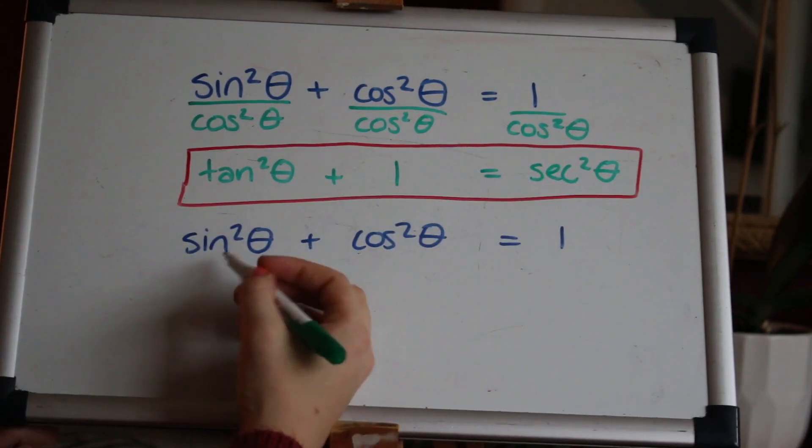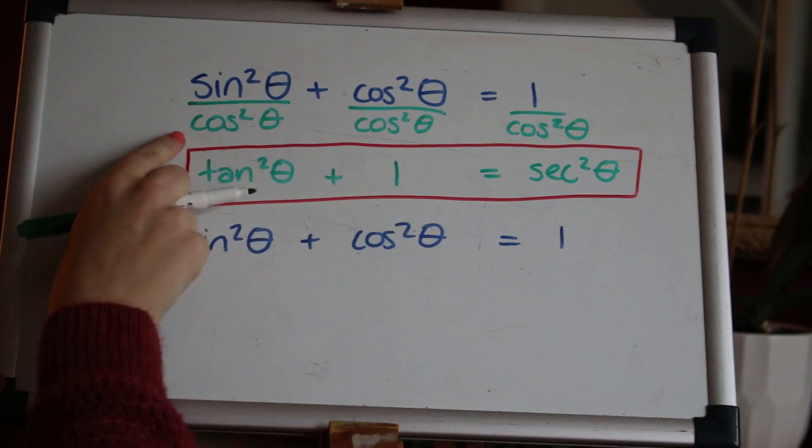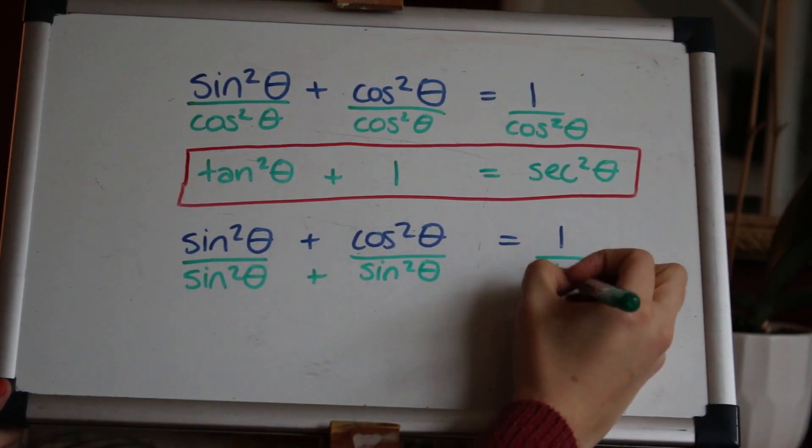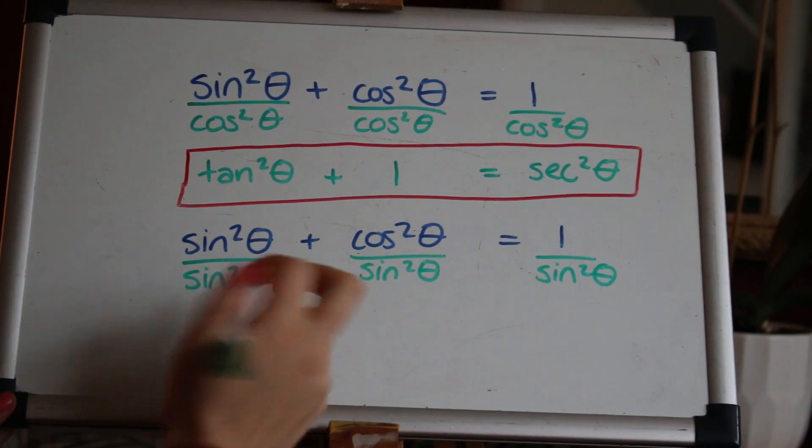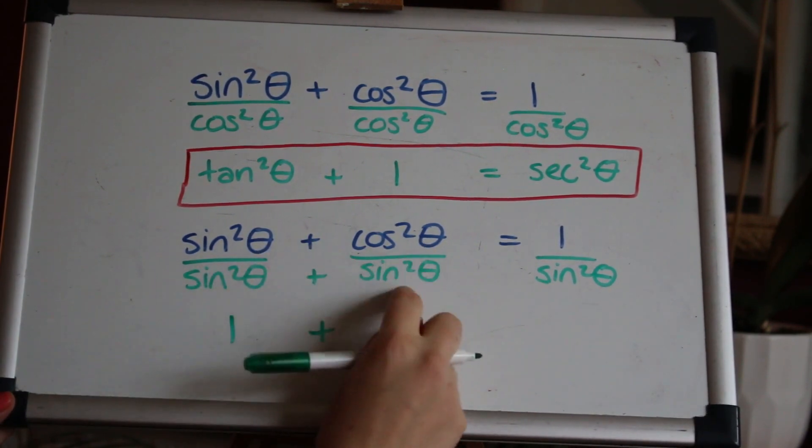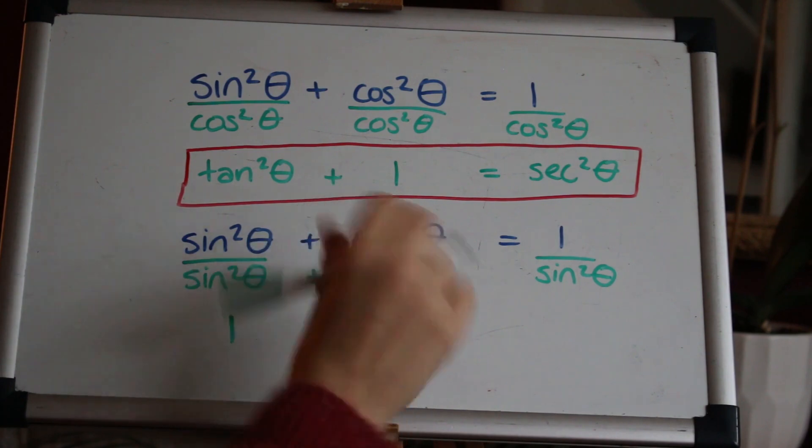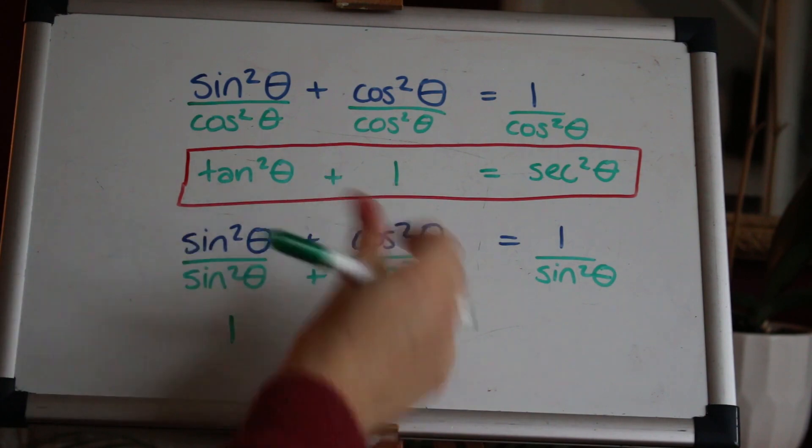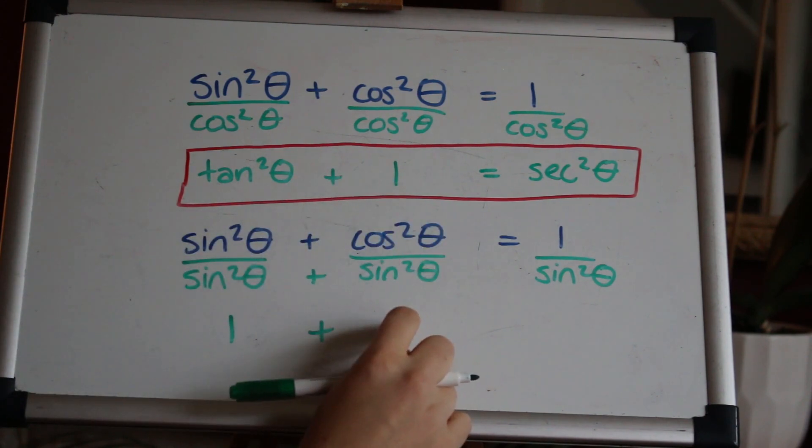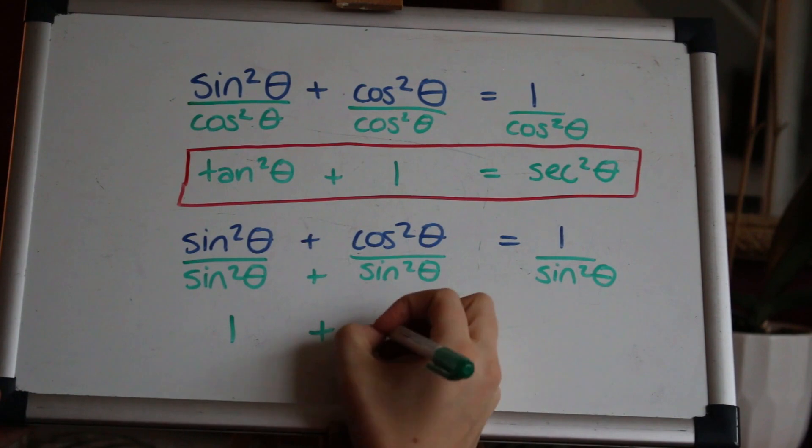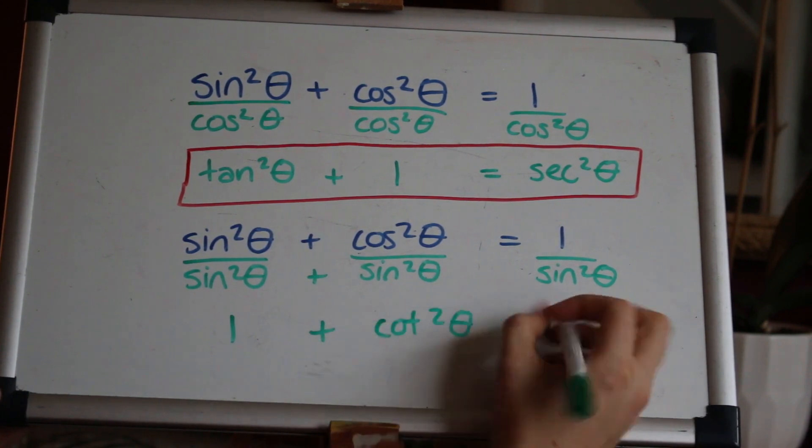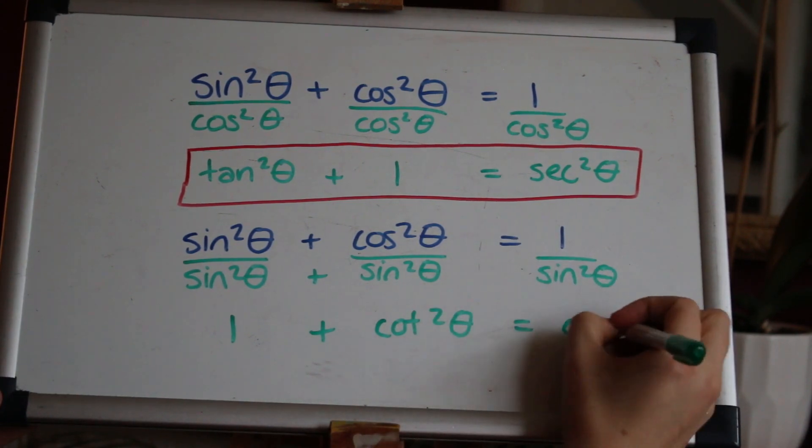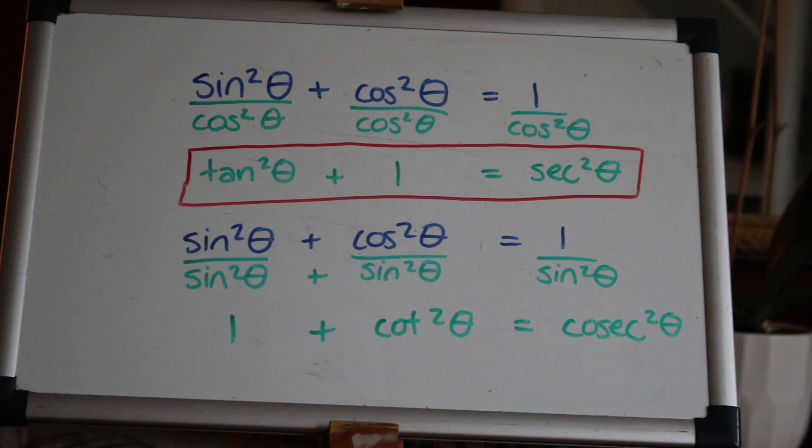Now for the second identity we're going to start with this again but this time we'll divide by sin²θ. Cos over sine is the flip, the inverse of tan. So the inverse of tan, one over tan, is as we know cot, so this here will be cot²θ. And one over sine as we now know is cosec, so that will be cosec²θ. And that gives you the second identity: 1 + cot²θ = cosec²θ.